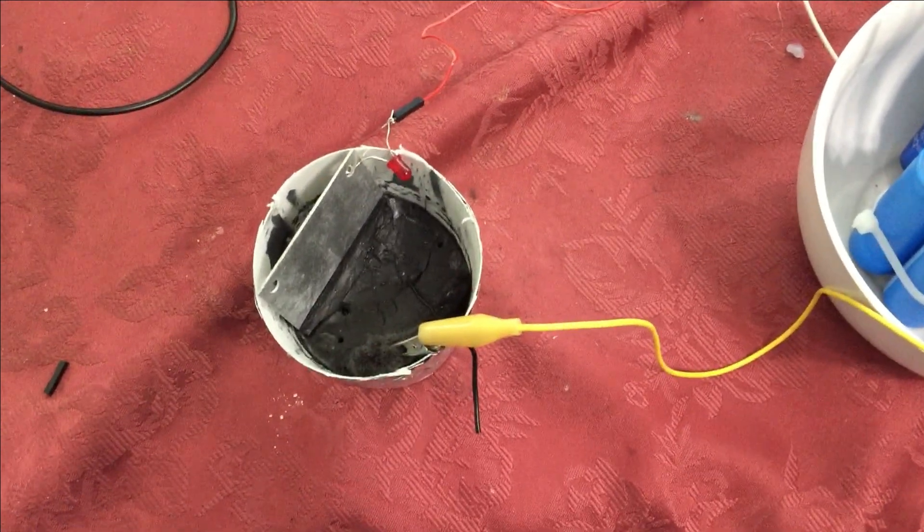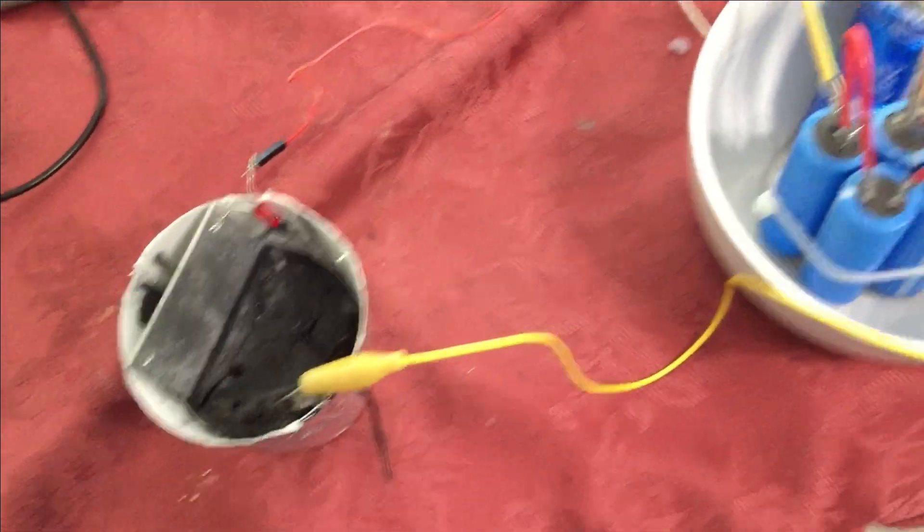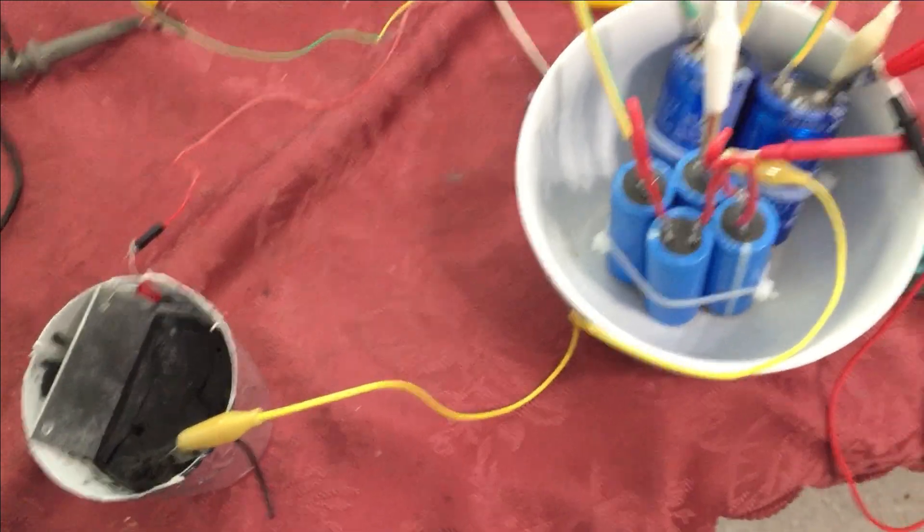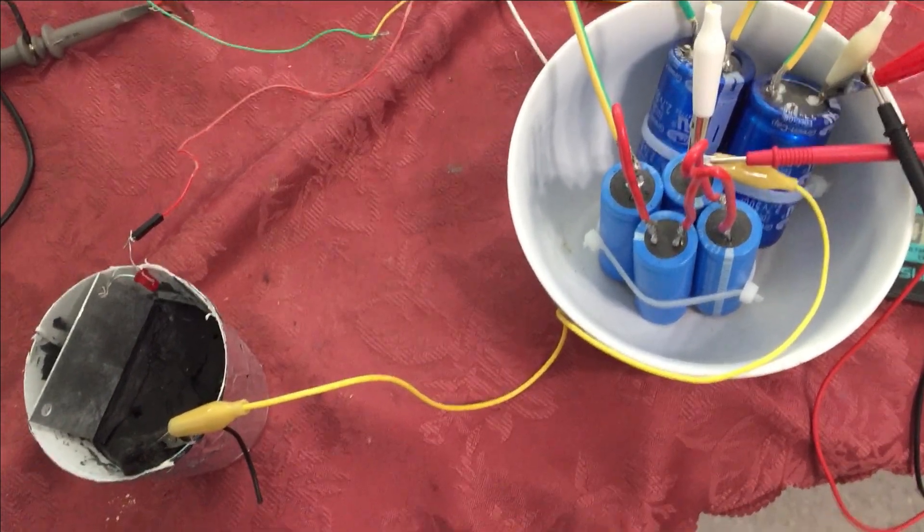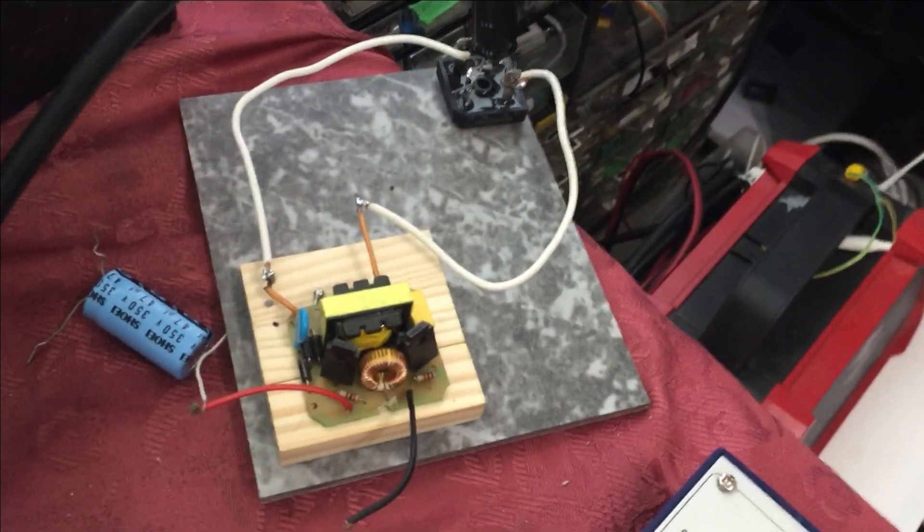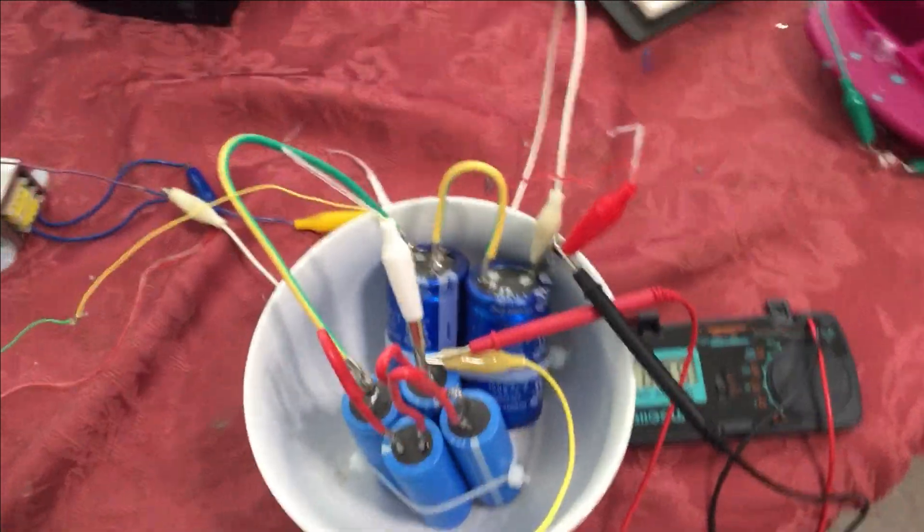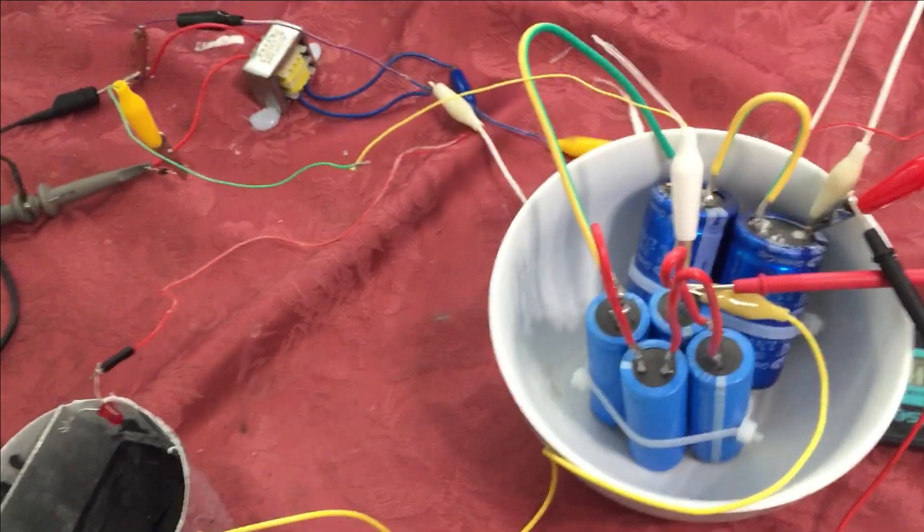Alright folks, so here's that crude self-runner I was talking about. I decided to take away the oscillator because it was confusing people - it was just my way of getting quick DC over here. It's actually disconnected, so now I've got capacitors and just the cell, all DC here.